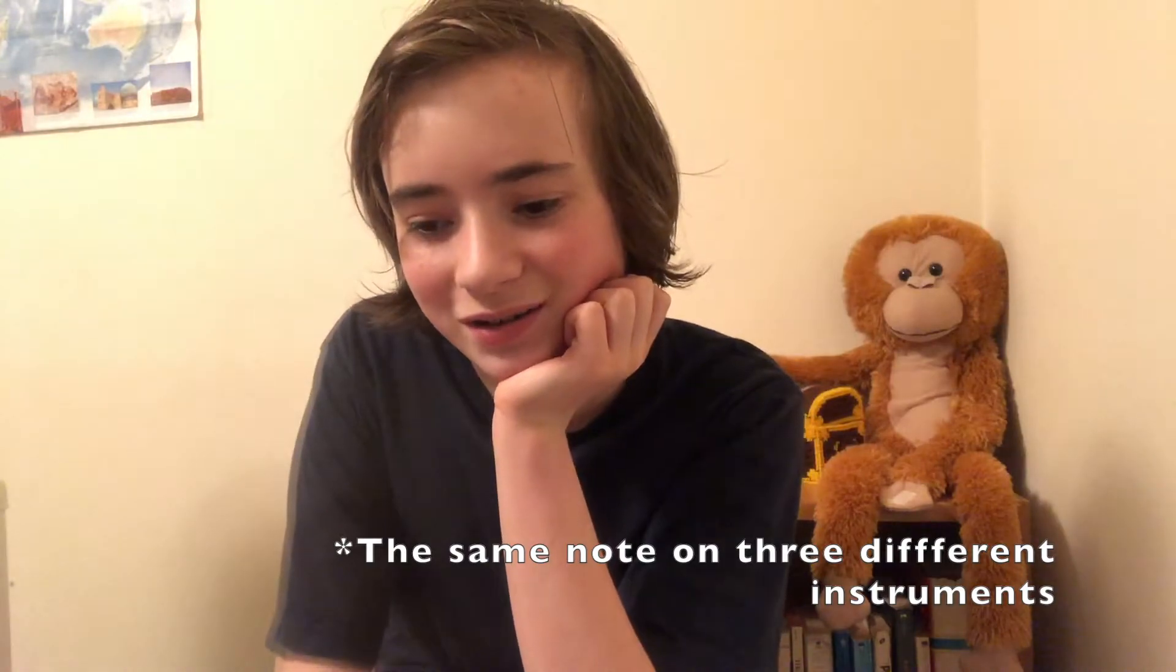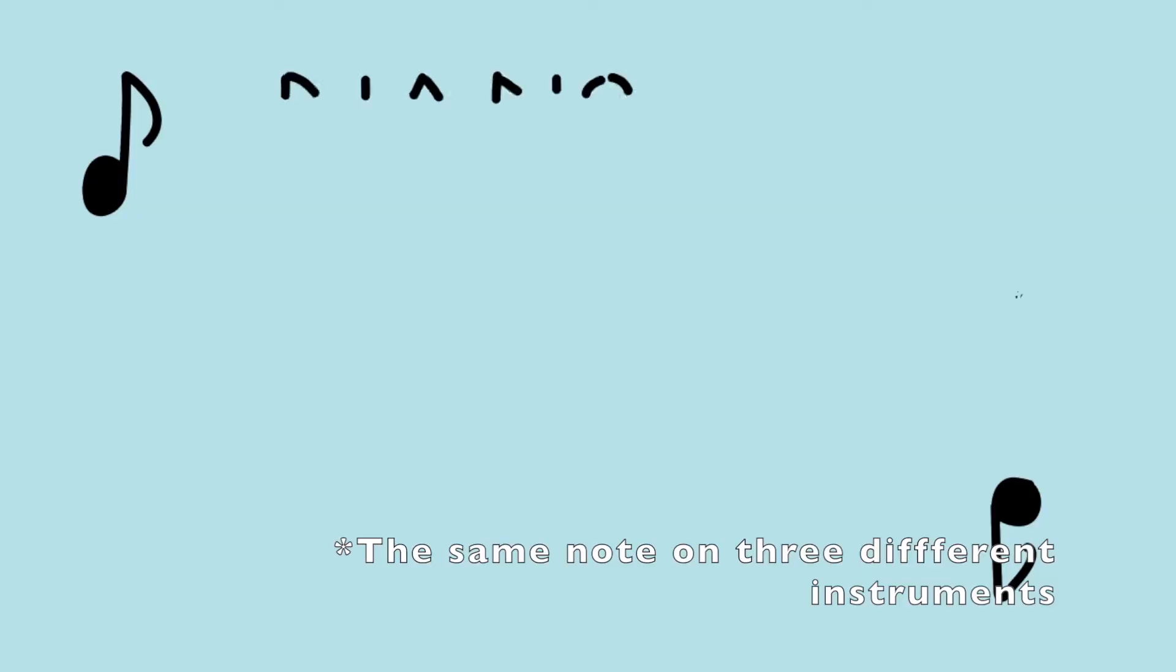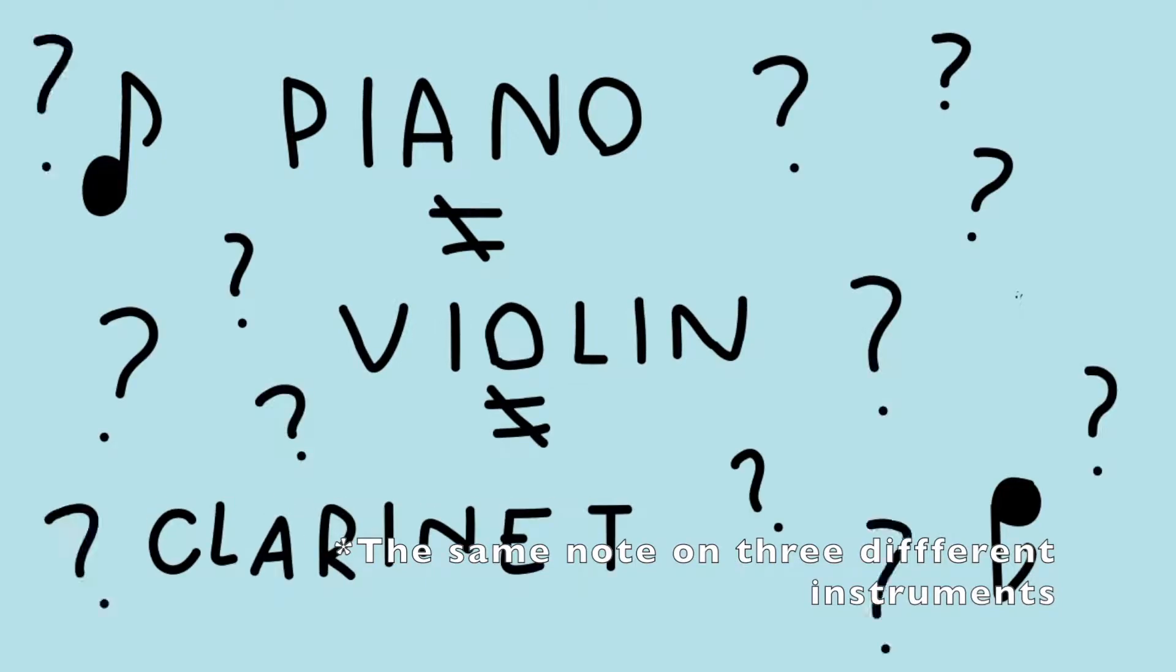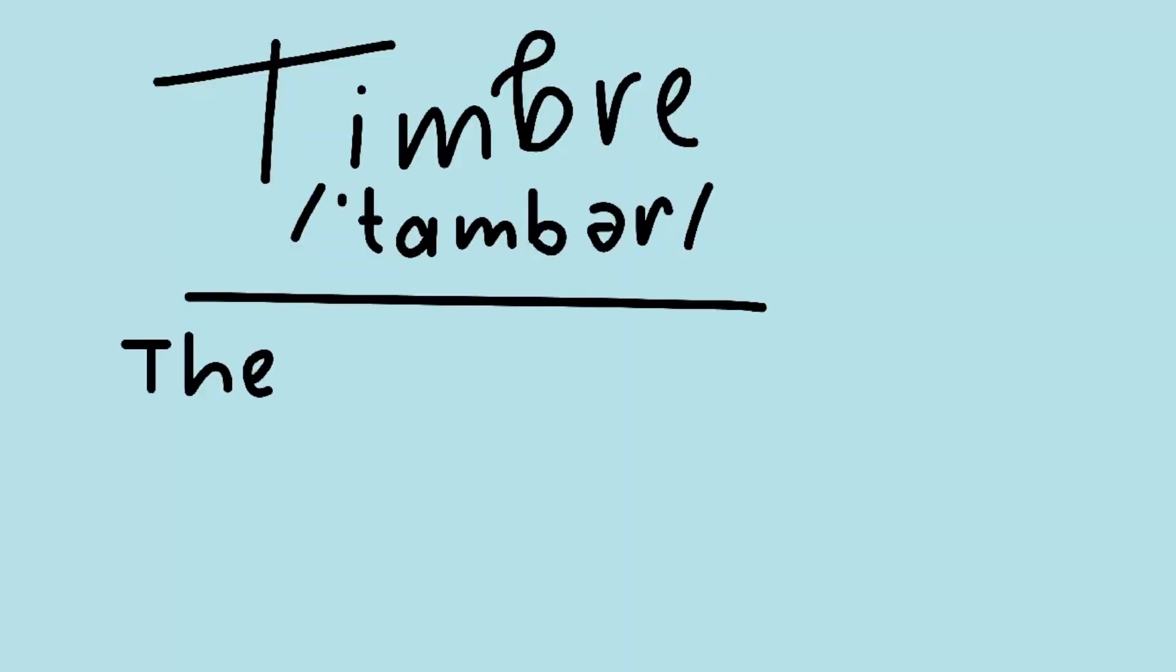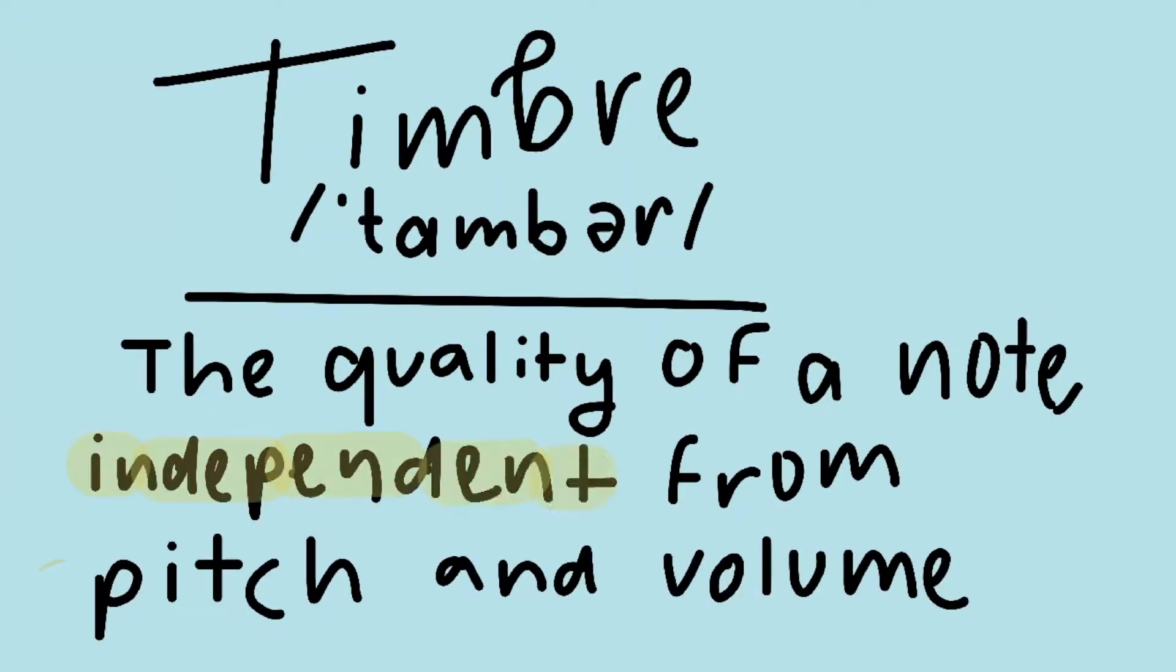You just heard three different notes played by three different instruments and they all sounded different, but they were the same note and around the same volume. So what changed? Well, it's the timbre. Timbre is defined as the quality of a note independent from pitch and volume. And to understand this deeper, the first thing we need to look at is waves.